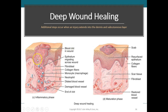During maturation, collagen fibers become more organized, fibroblasts decrease in number, and blood vessels are restored to normal. If the damage was not very deep, the tissue is replaced with functional tissue that goes right back to doing its job. However, functional tissue may sometimes be replaced with scar tissue.